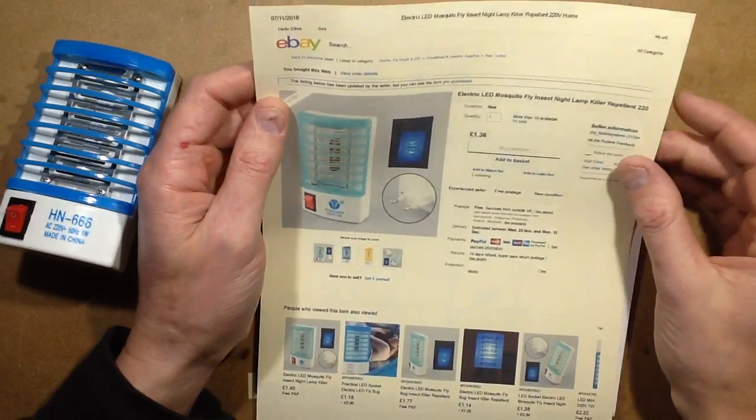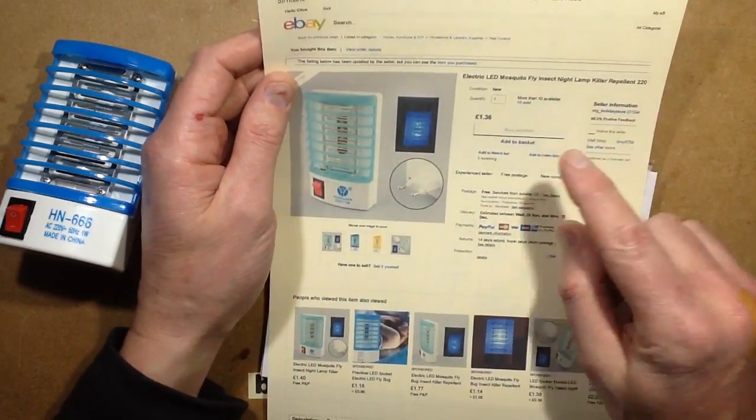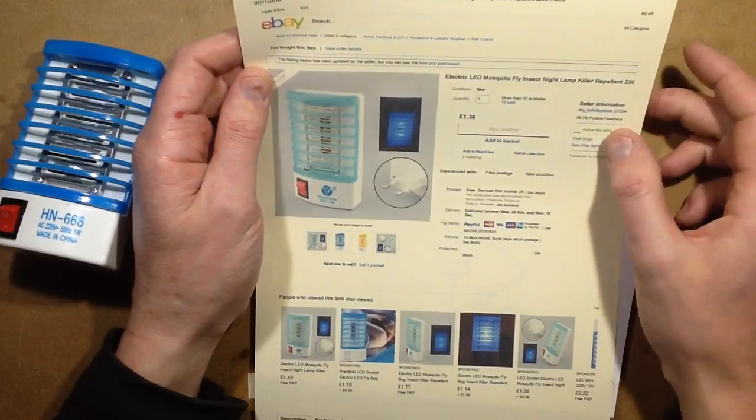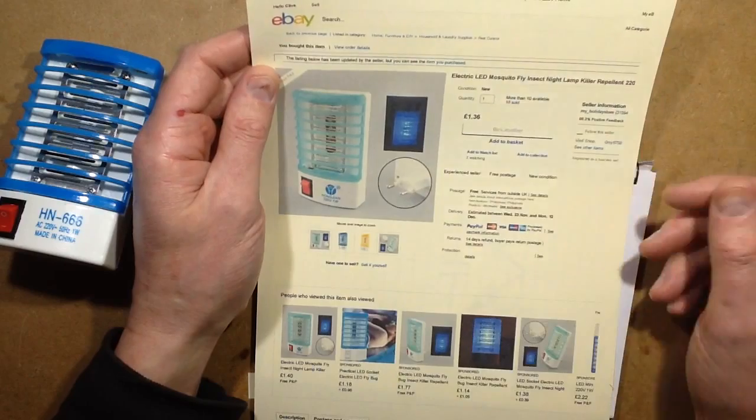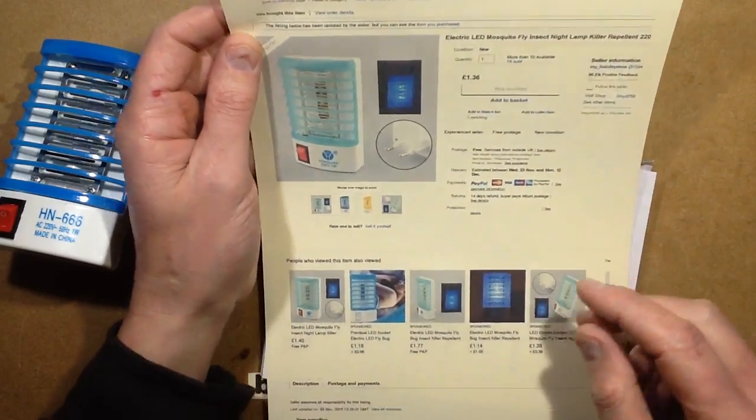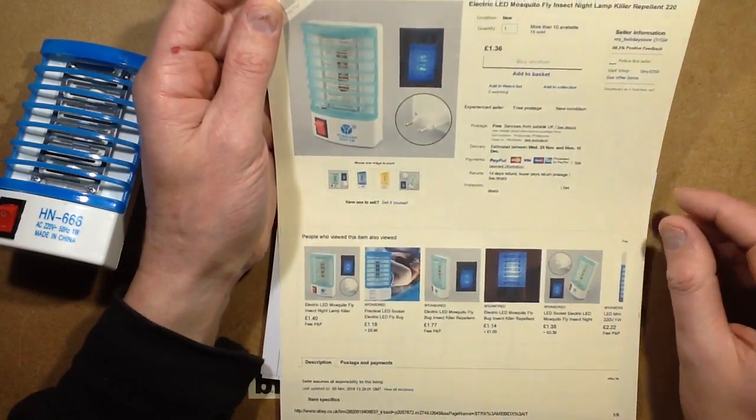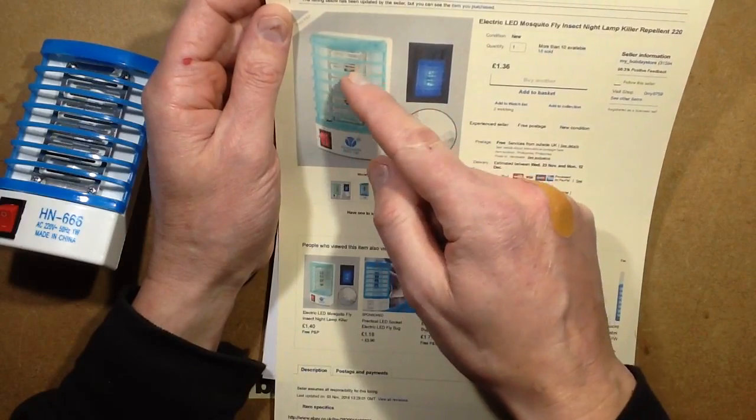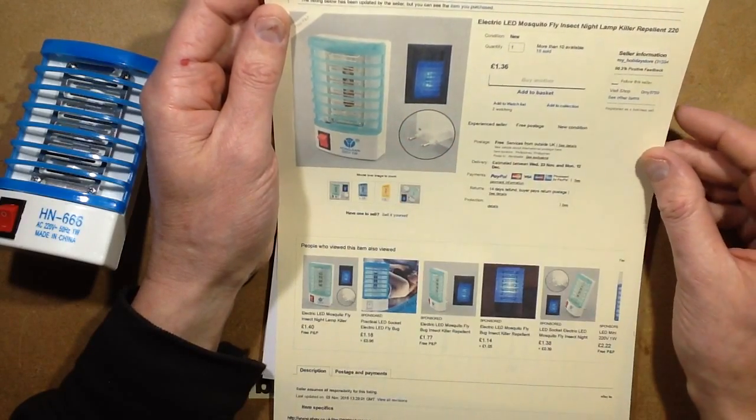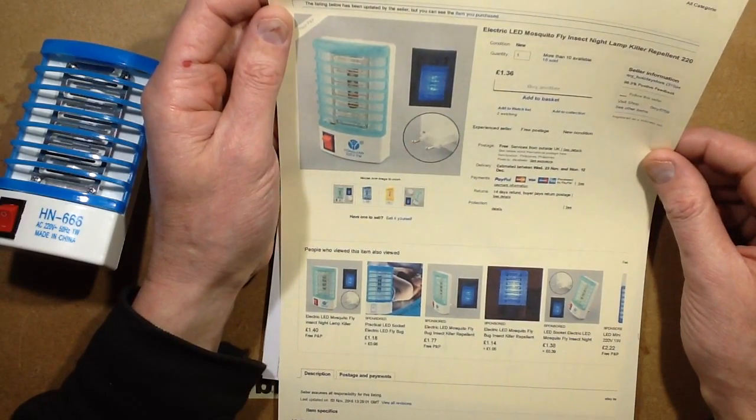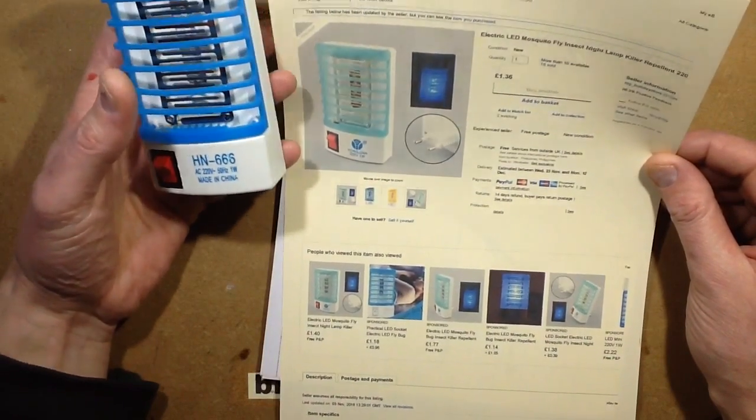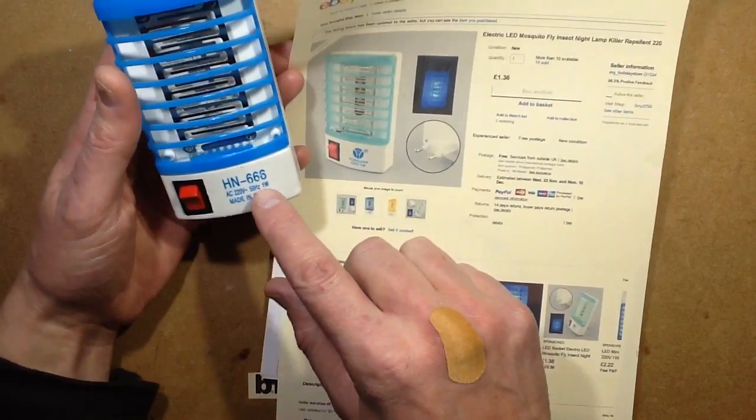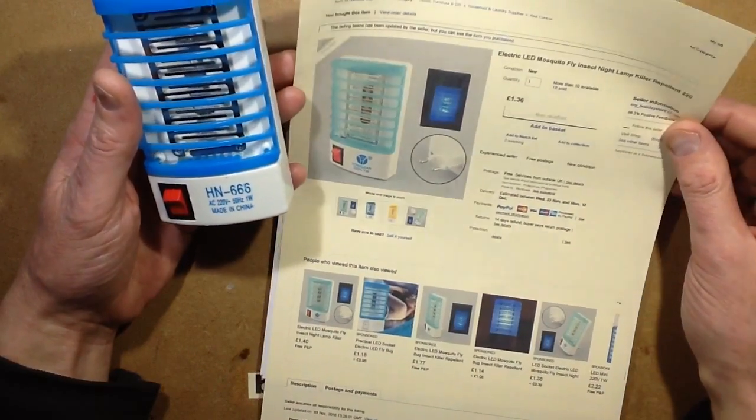I thought I'd add a few extra details to this video. The first is that this particular unit came from an eBay seller called My Holiday Store and it cost £1.36. Quite cheap, I mean they're all very cheap, it's a really common item. The one in the picture shows the standard through-hole LEDs, so you don't really 100% know what you're going to get here. It's notable that this particular version has the rather odd number HN666 on the front of it.